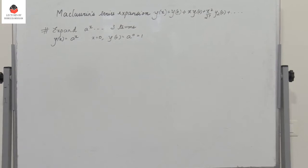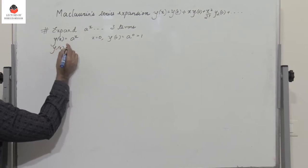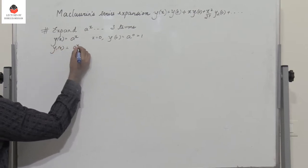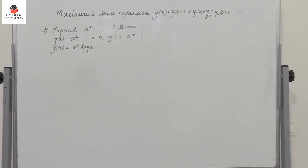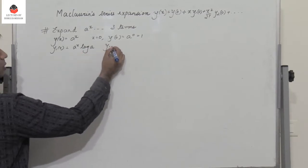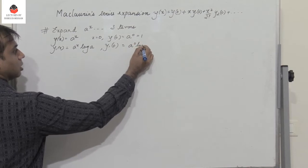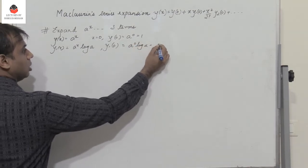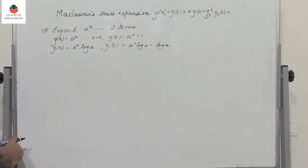Now what is y₁(x)? Differentiate y(x) with respect to x. So y₁(x) is the differential of a^x, which is a^x · log a. Put x = 0: y₁(0) = a^0 · log a = log a.